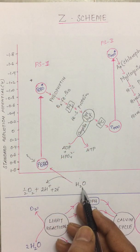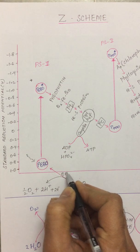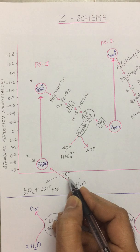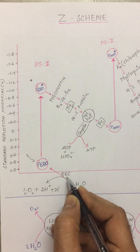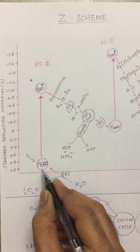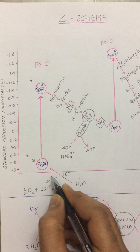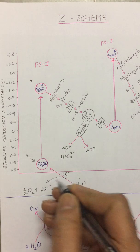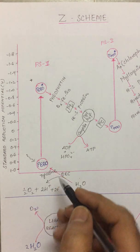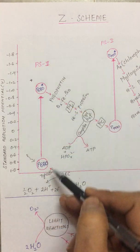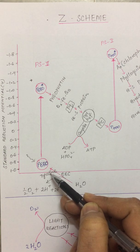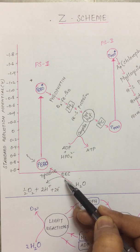In the splitting of the water molecule, the reaction is catalyzed by an oxygen evolving complex, or oxygen evolving center, which is a manganese and calcium center. This oxygen evolving complex provides the electron to the P680 system through a tyrosine residue present in between. That immediate electron is given by the tyrosine, which is converted into a cationic radical, and then tyrosine takes up an electron from the splitting of the water molecule.